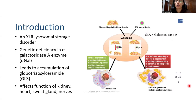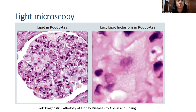This is the characteristic appearance of a glomerulus in Fabry's disease, where the podocytes show an expanded cytoplasm due to lipid accumulation, which gives it a very clear, foamy, and lacy sort of appearance.